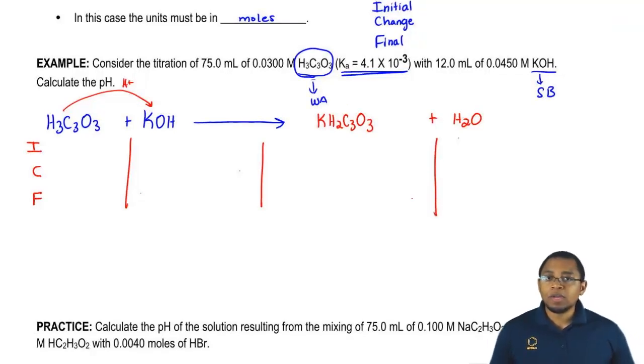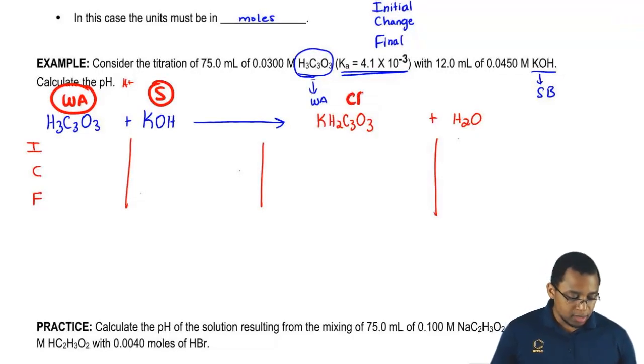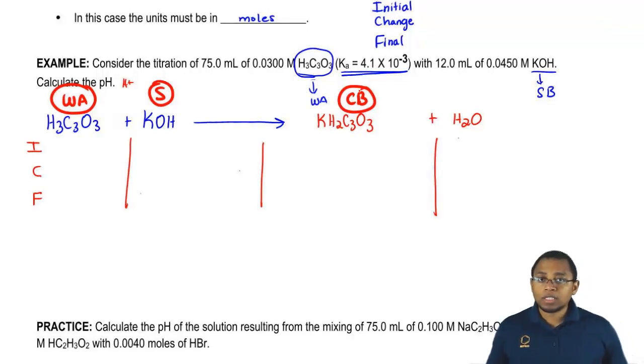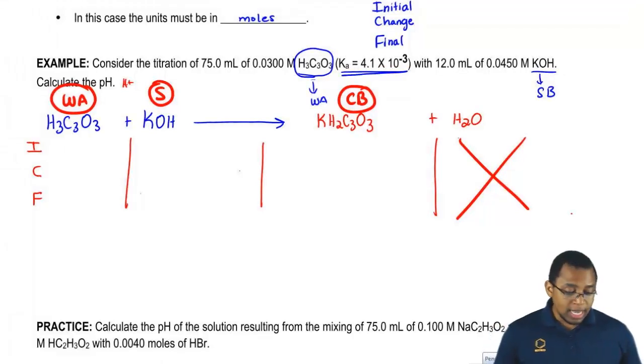In an ICF chart, we only care about three things: whatever is strong, the weak acid, and the conjugate base. Those are the three things we only focus on. The fourth thing, we never look at it, we just ignore it. In this particular example, the fourth thing happens to be water, a liquid. An ICF chart ignores liquids and solids. But even if it wasn't water, we'd still ignore it because in an ICF chart we only care about what is strong, the weak acid, and the conjugate base.